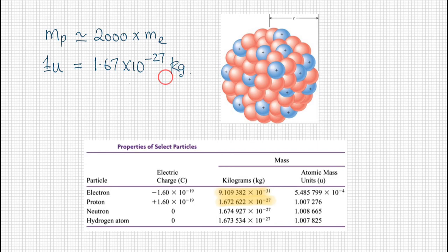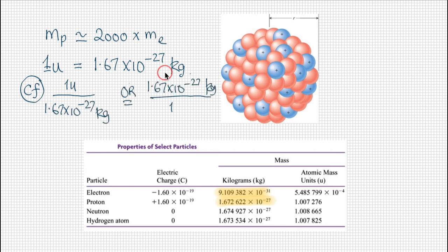If we want to convert from atomic mass units to kilograms, we use the factor conversion method. These are the conversion factors we can use. If we want to convert to U, we multiply by this fraction, or if we want to convert from U to kilogram, we multiply by this fraction.